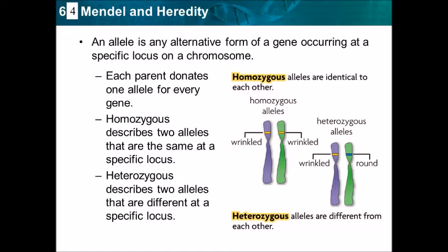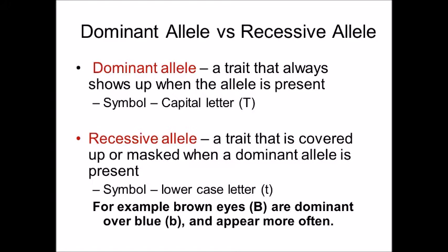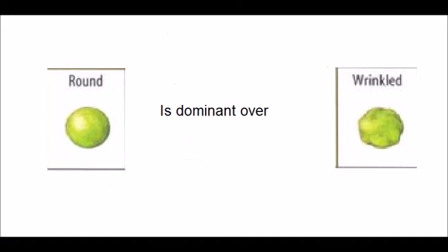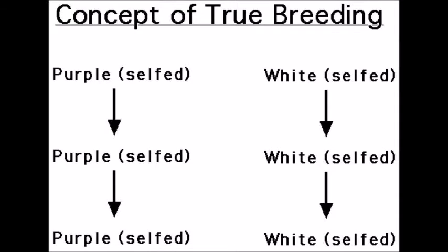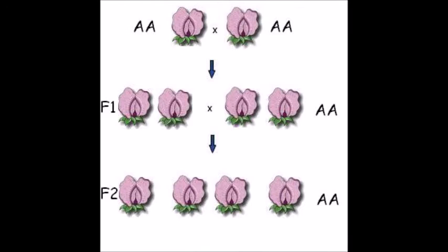If an organism inherits two copies of the same allele for a gene, that organism is said to be homozygous for that gene. On the other hand, if an organism inherits two different alleles for a gene, it is said to be heterozygous. One allele can be dominant over another — a dominant allele is expressed whether the organism is homozygous or heterozygous. An allele can also be recessive, in which case it is only expressed in the homozygous state. In the case of Mendel's pea plants, the smooth allele was dominant over the wrinkled allele. This explains the results of Mendel's breeding experiments.